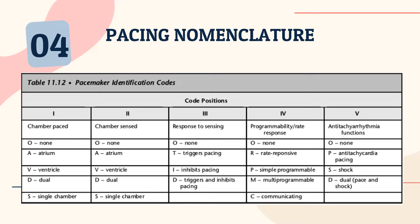Position 4 is programmability or rate response: O is none, R is rate responsive, P is simple programmable, M is multi-programmable, and C is communicating. Position 5 covers anti-tachyarrhythmia functions: O is none, P is anti-tachycardia pacing, S is shock, and D is dual pace and shock.